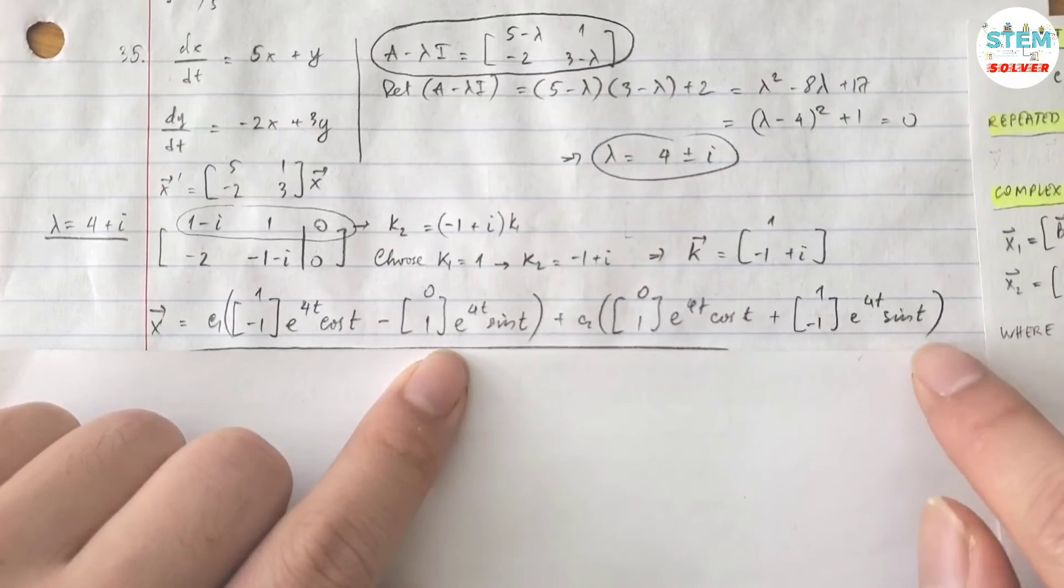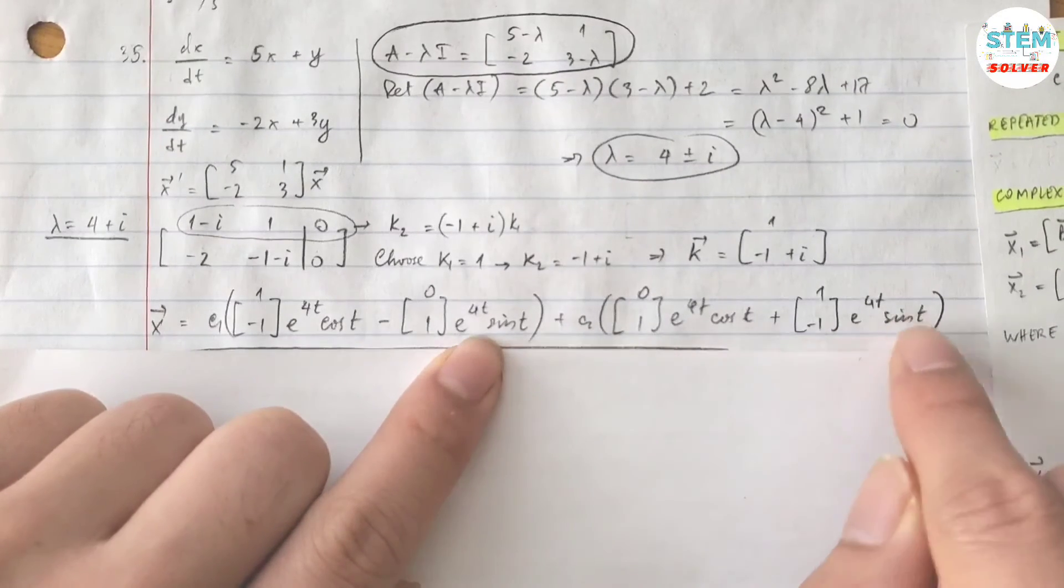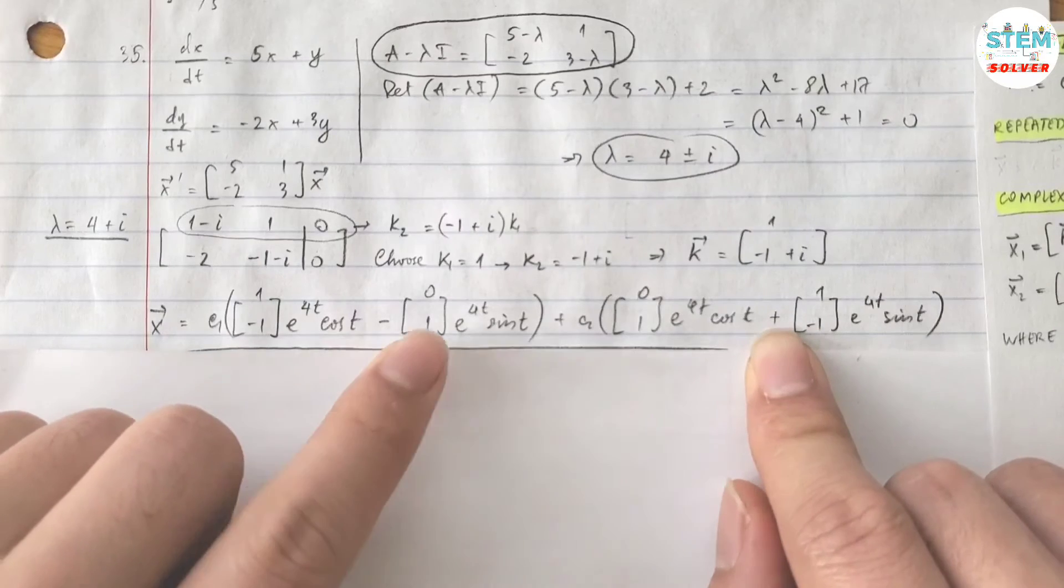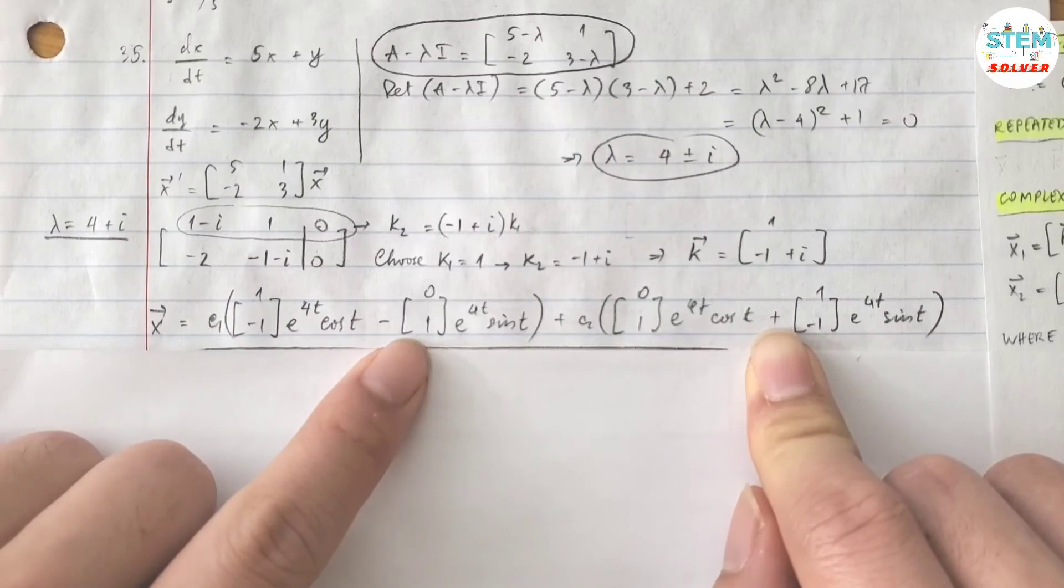And for the second solution you just take this and this, put it over here, change the sign, and then switch the position of these 2 vectors.